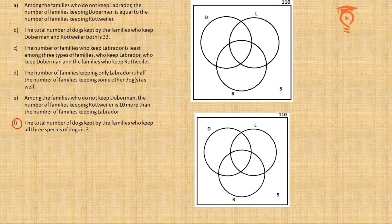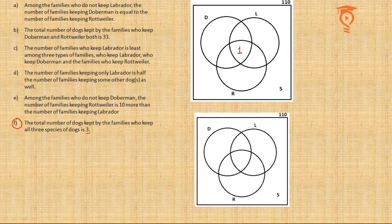My starting point is the last condition given: the total number of dogs kept by families who keep all three species is three. Since no family keeps more than one dog of the same species, families keeping all three species must keep three dogs each. Since the total is three, that completely implies there is only one such family. This diagram counts families — 110 total — not dogs. So the intersection of all three circles contains exactly one family.